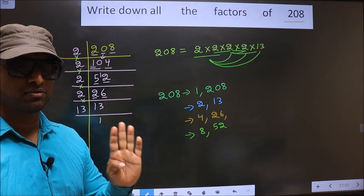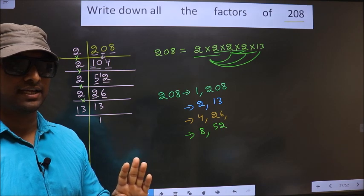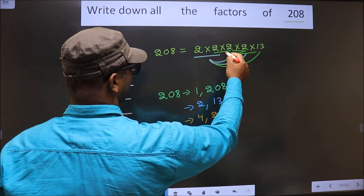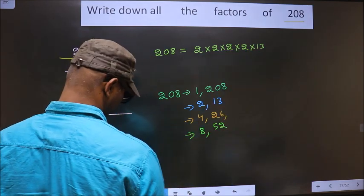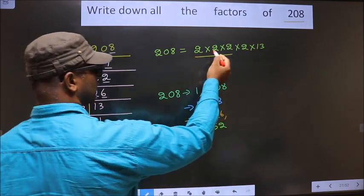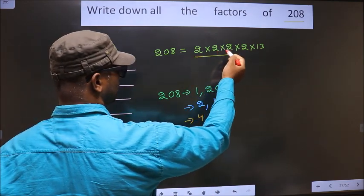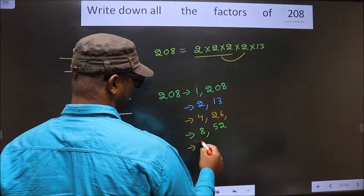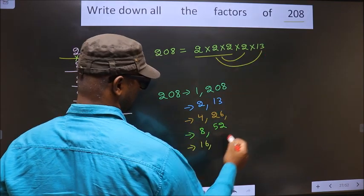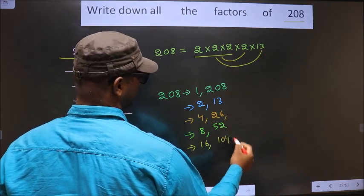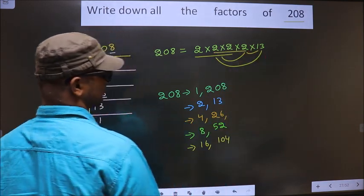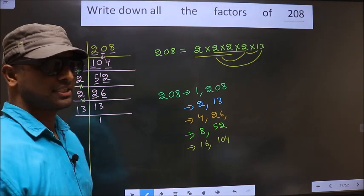Now you take a combination of 4 numbers. First I fix these 3 numbers: 2 × 2 is 4, 4 × 2 is 8. 8 combined with 2 gives 16. 8 combined with 13 — 8 × 13 is 104. If I take these 3 numbers combined with 13, I also get 104. So no other combination possible.